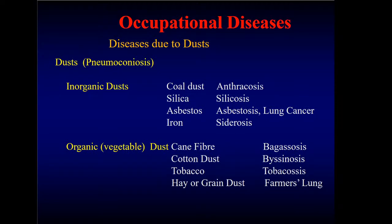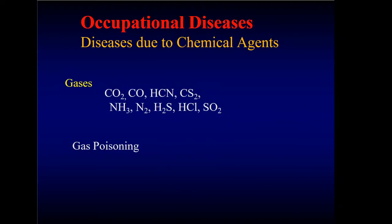Dust can cause pneumoconiosis — a very common exam question. Different types of dust: inorganic dust such as coal resulting in anthracosis, silica resulting in silicosis, asbestos resulting in asbestosis or lung cancer, and iron resulting in siderosis. Organic dust: cane fiber resulting in bagassosis, cotton dust resulting in byssinosis, tobacco resulting in tobacosis, and hay or grain dust resulting in farmer's lung.